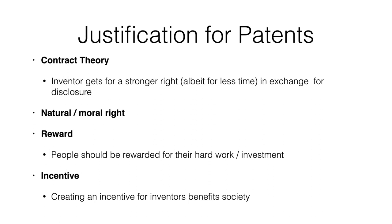What are the justifications for patents? In one respect, there is a contract between society and the inventor — the inventor gets a stronger right in exchange for disclosure. If you come up with a new way to make beer that requires much less water, you can get into the beer-making business and create beer that is cheaper to produce and more environmentally friendly. Your capacity to do that relies on your ability to keep your processes secret, and there is law to protect trade secrets.